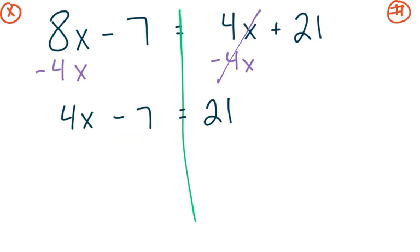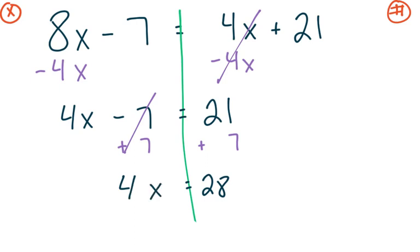We get rid of a minus 7 by doing the inverse operation — the opposite of minus is plus. So we add 7 to both sides. Minus 7 plus 7 is gone, and on the right side I have 21 plus 7, which equals 28. All that's left on the left side is 4x, which is 4 times x. The way to get rid of a times is to divide. So instead of times 4, I divide by 4 on both sides. 4 divided by 4 leaves 1x — the variable is all alone on the left. And 28 divided by 4 is 7. So my final answer is x equals 7.